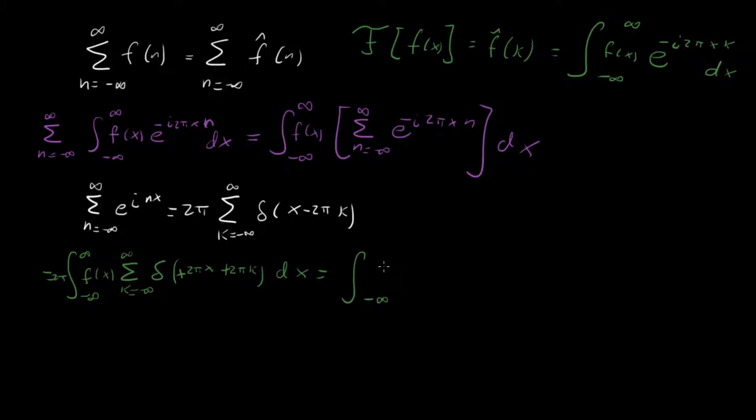And so what's going to happen, we're going to get integral minus infinity to infinity f of x sum k equals minus infinity to infinity delta of x plus k dx. Okay, now we've just about got it.